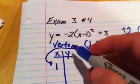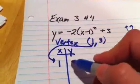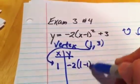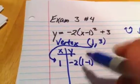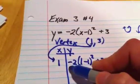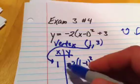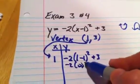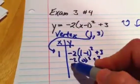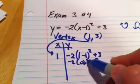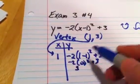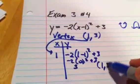So I want to get negative 2 times 1 minus 1 squared plus 3. So negative 2 times 0 squared plus 3. 0 squared is 0 times negative 2 is 0, plus 3 is 3. So I'm getting the point 1, 3.